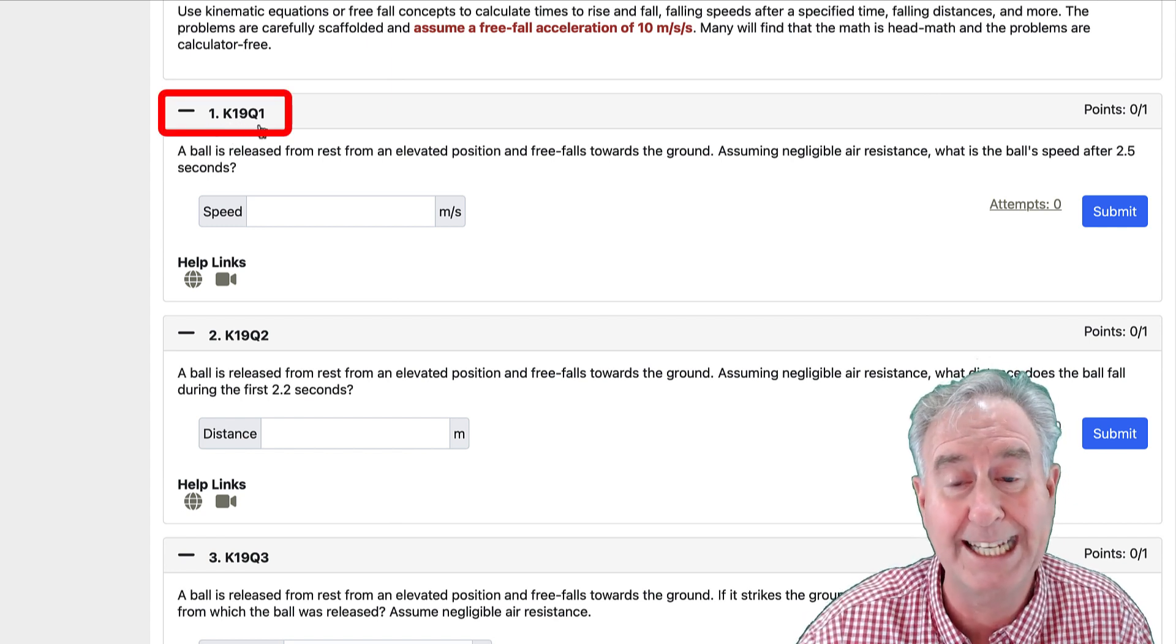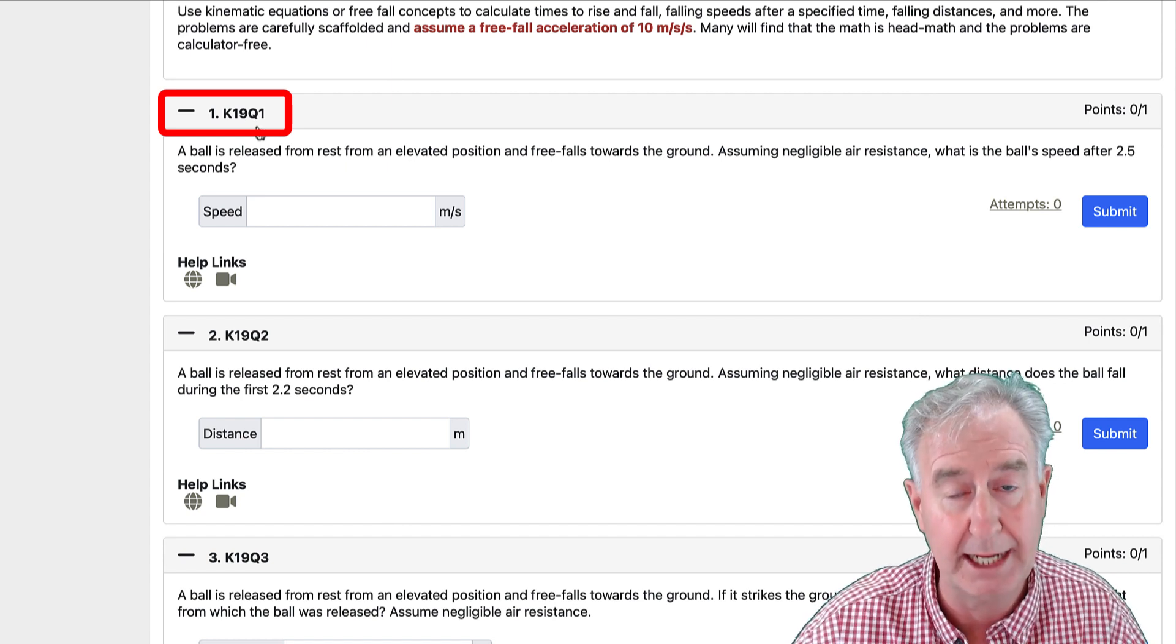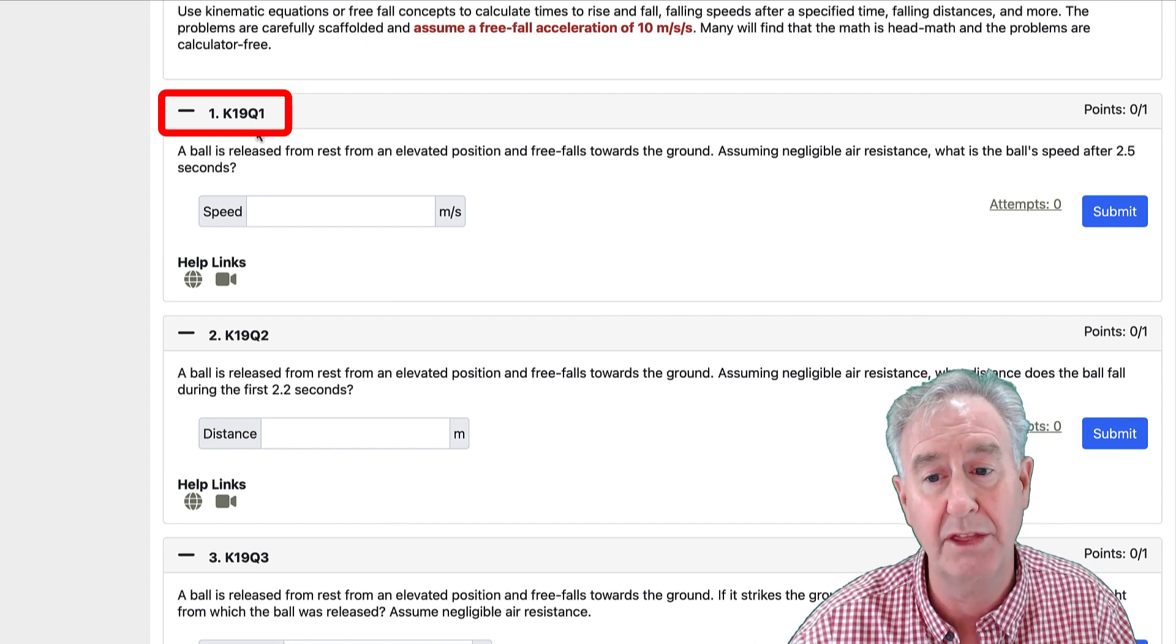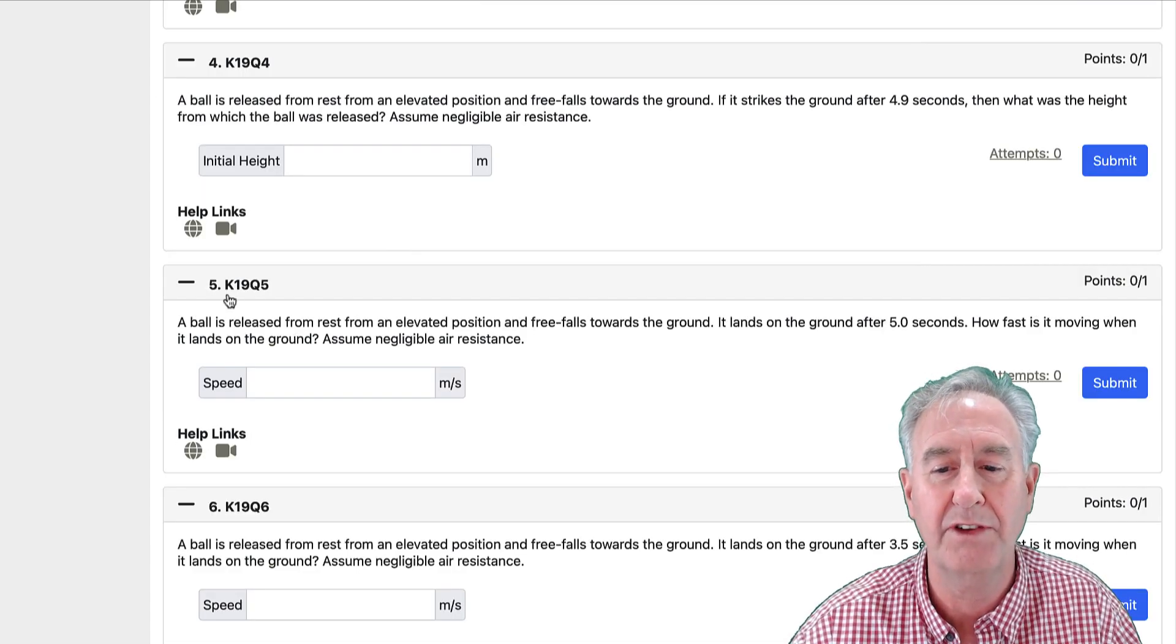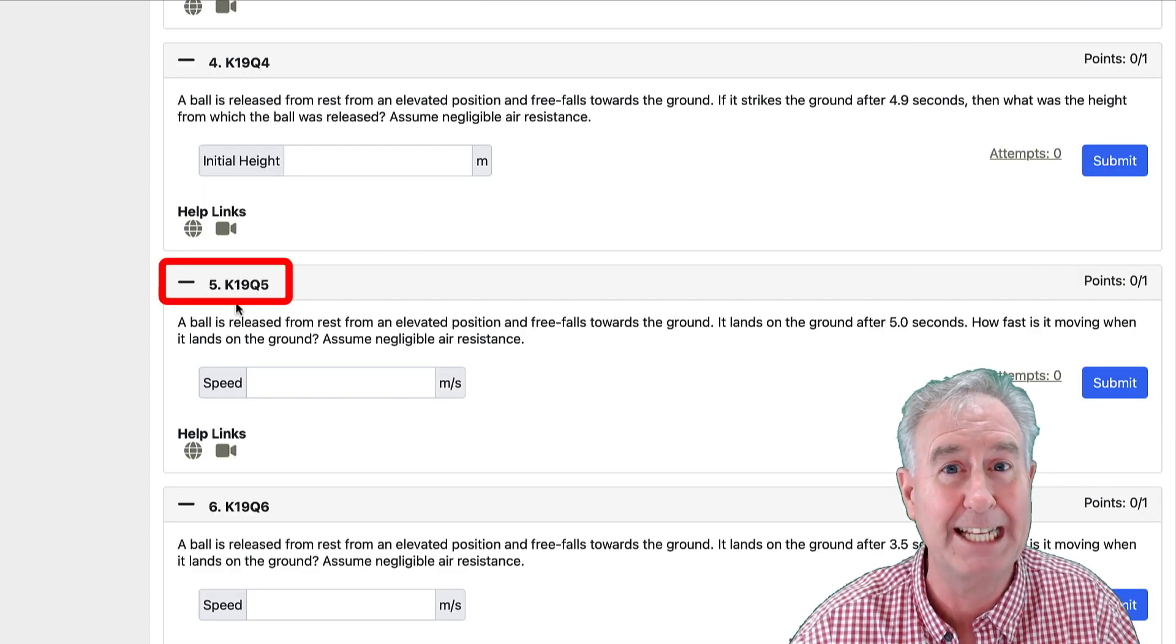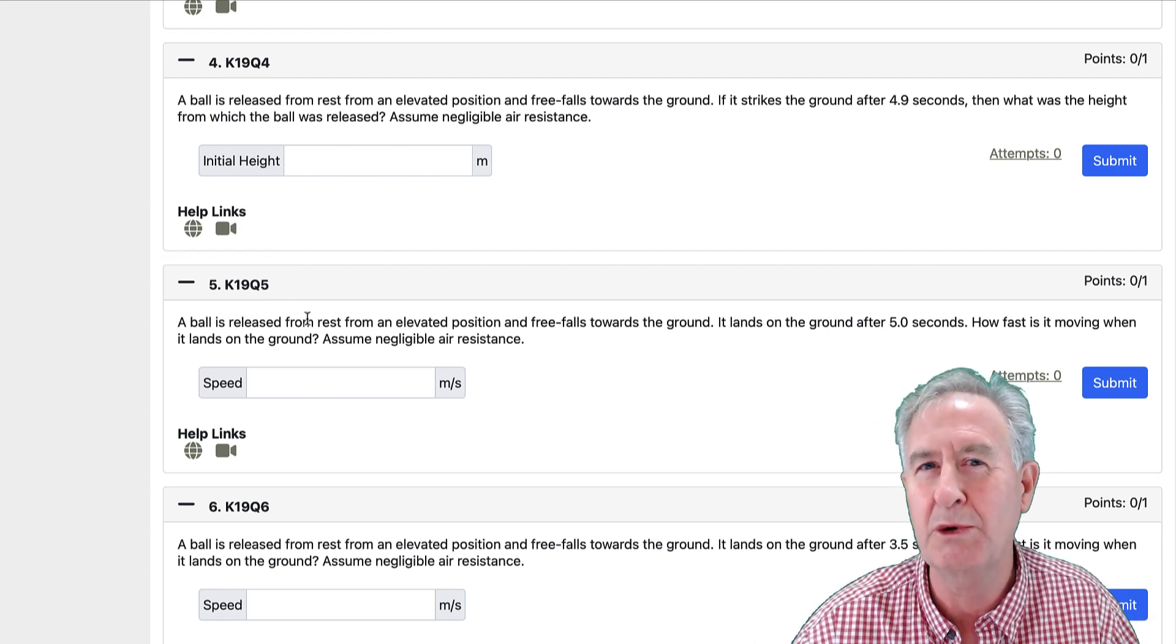So we're in set 19 of Kinematics, thus the K19, and then the Q1 for the first problem. And we can continue through. If we look at the fifth problem, it's K19 Q5 and so forth. So there's a rhyme and a reason to our nomenclature for naming these problems.